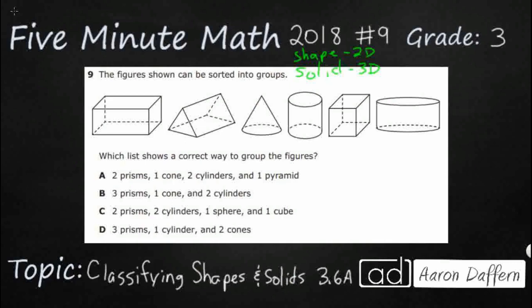So we've got six solids and we're going to need to sort them, but let's see if we can go ahead and label them. So we have this first one looks like a box, like maybe a tissue box.